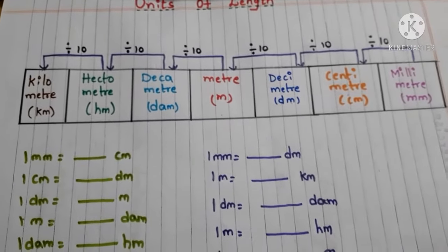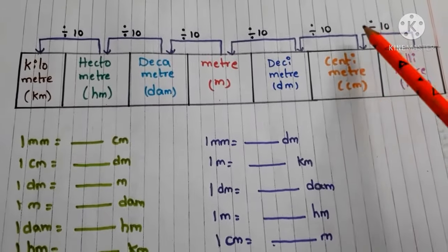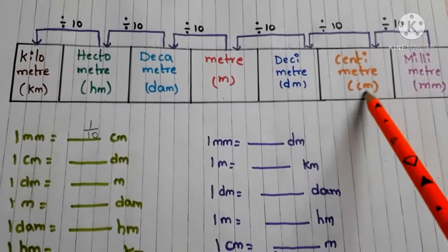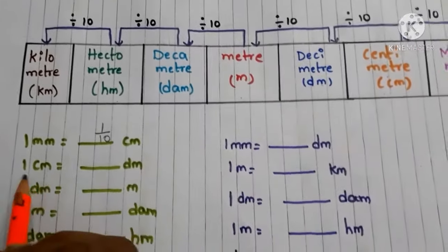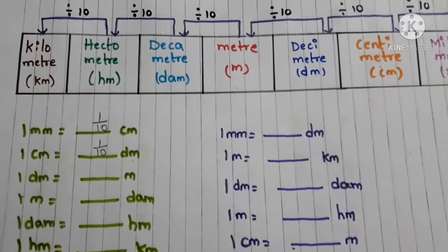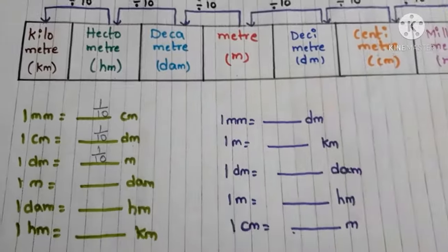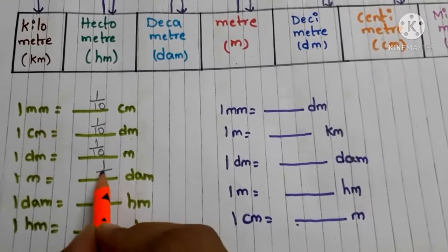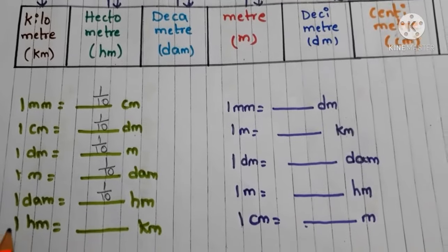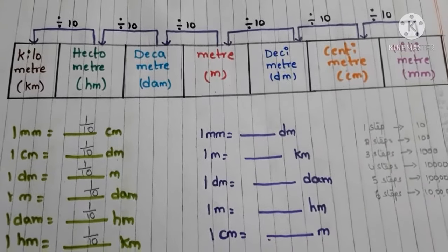Now let us see how to convert smaller units to higher units. To convert millimeters to centimeters, divide by 10. To convert centimeters to decimeters, divide by 10. To convert decimeters to meters, divide by 10. Likewise, 1 decimeter equals 1/10 hectometer, and 1 hectometer equals 1/10 kilometer.